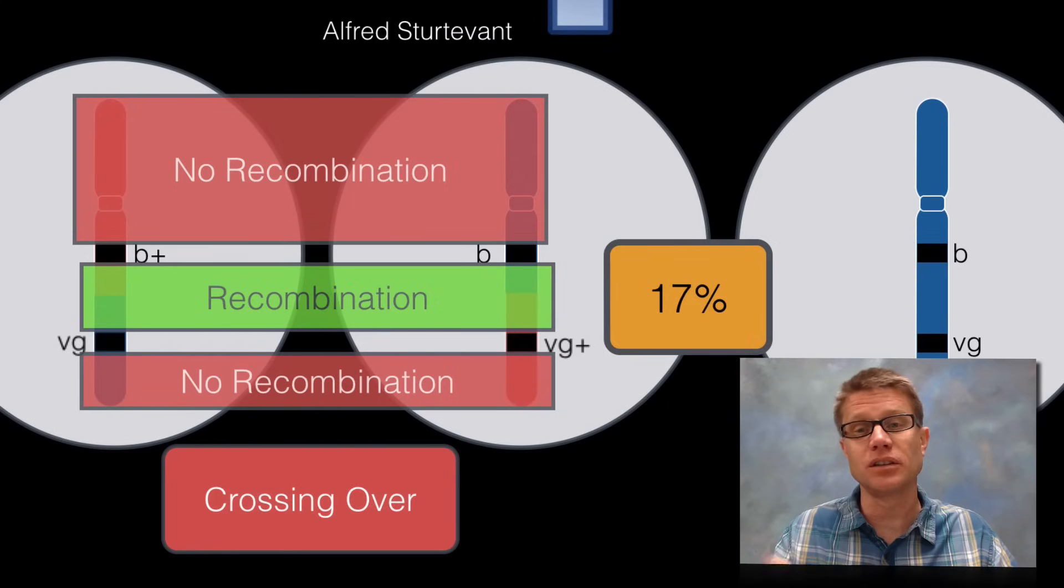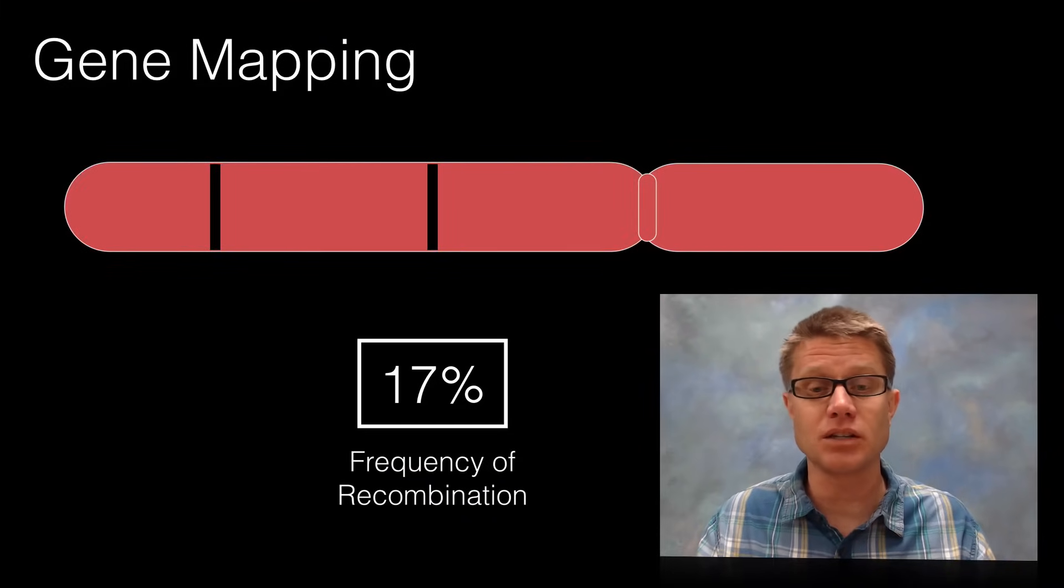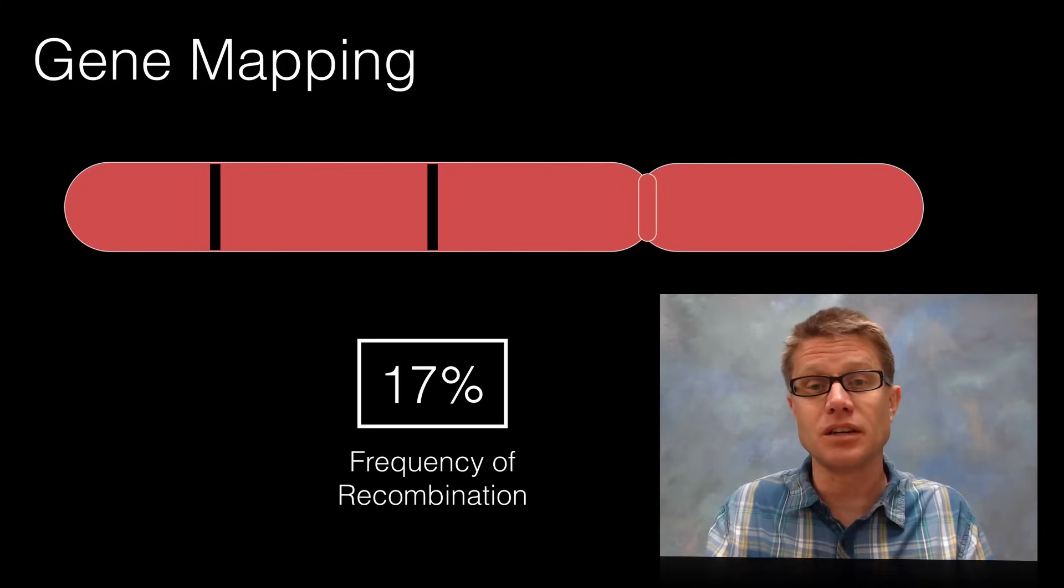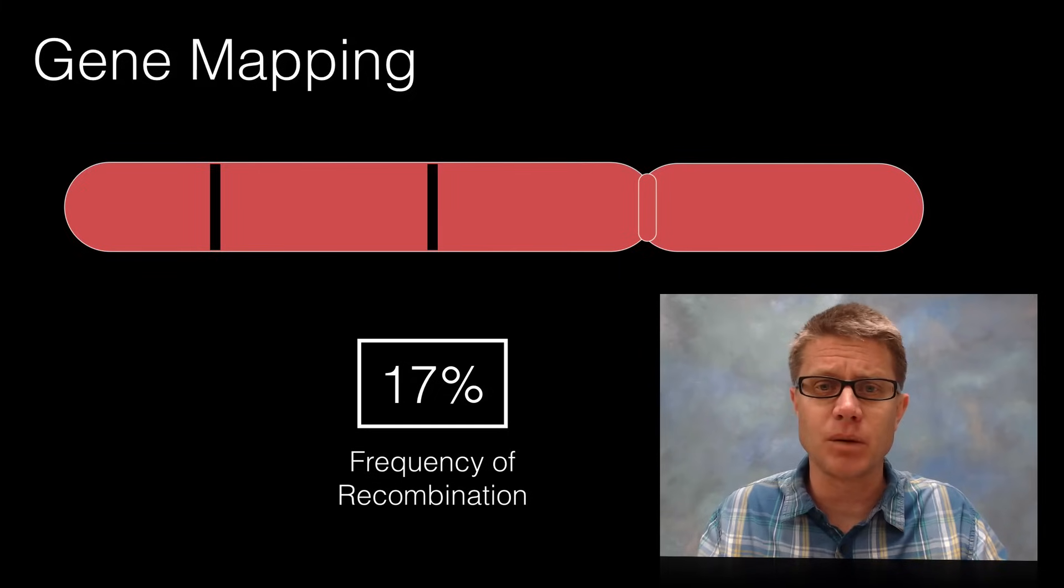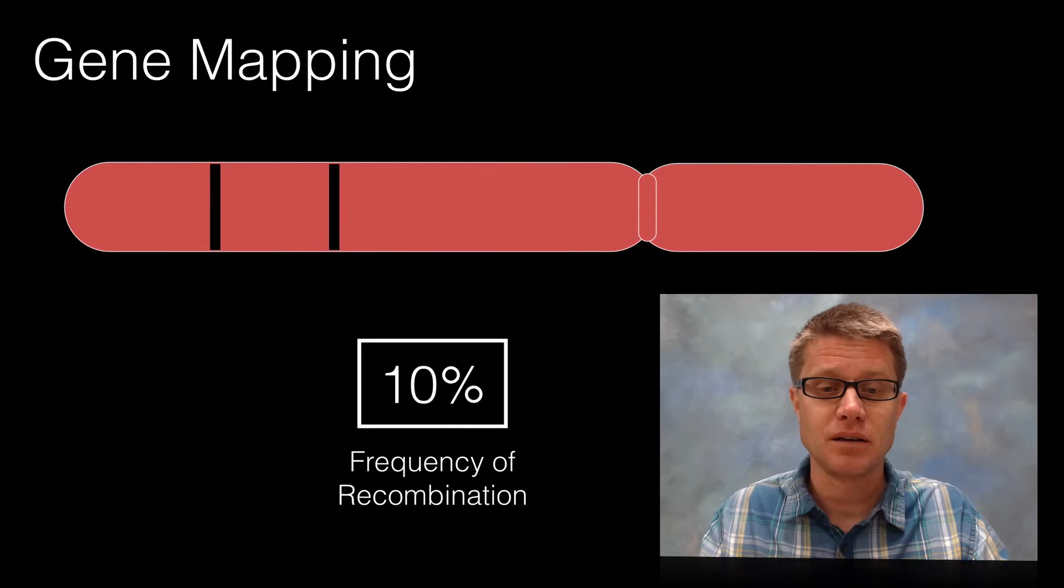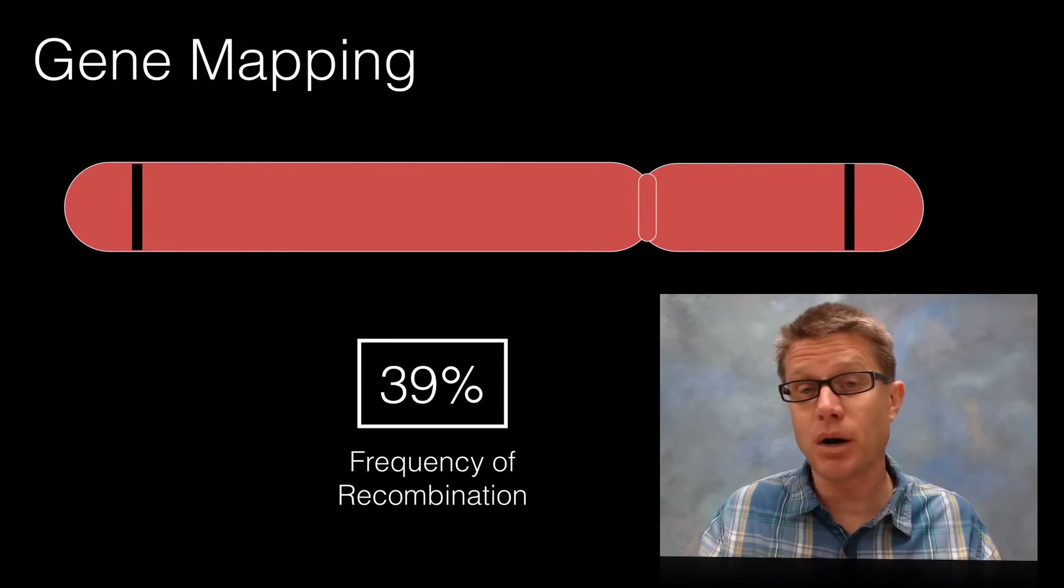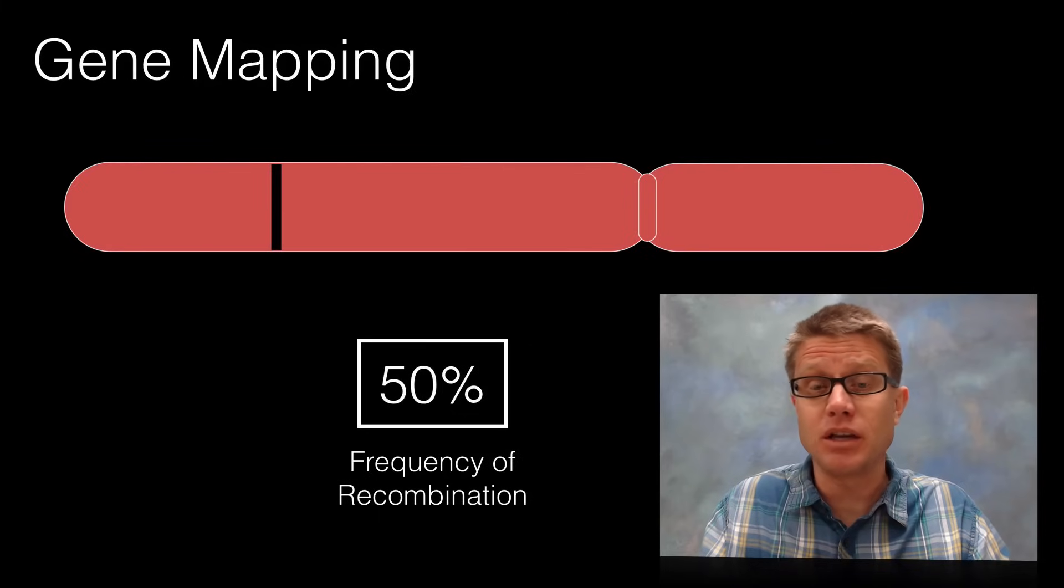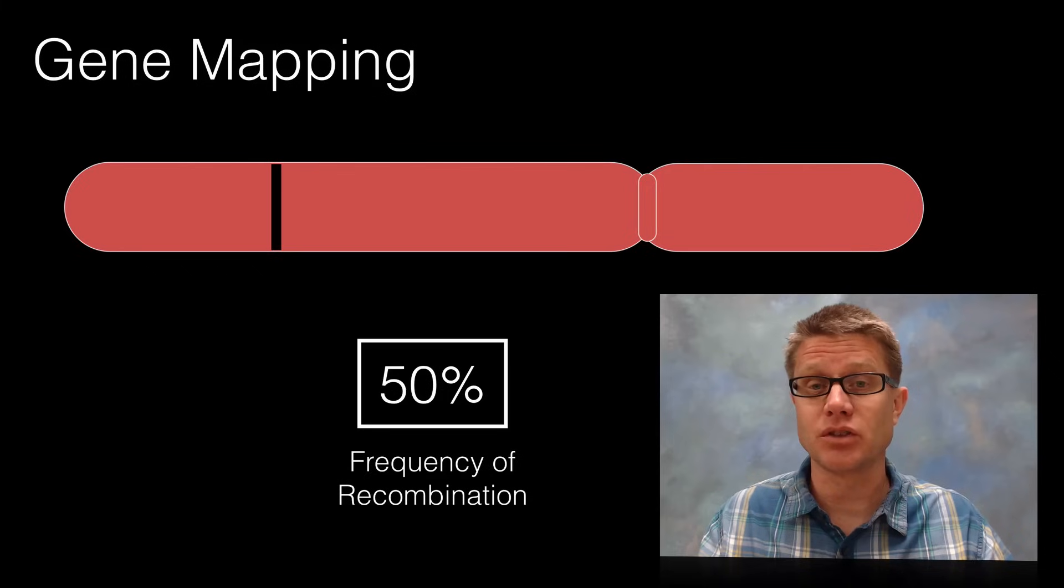We can use this one cross to figure out the frequency of recombination, and then they were able to use that to build a gene map. If we look at a chromosome, if we look at that frequency of recombination, let's say it's 17%, that implies that it's an arbitrary distance of 17 map units apart on the chromosome. Let's say the frequency of recombination is less than that, that means the genes are closer together. What if the frequency of recombination is greater than that? Means that it's farther apart. What if it's exactly 50%? If it was independent assortment that would mean that those two genes are found on different chromosomes.